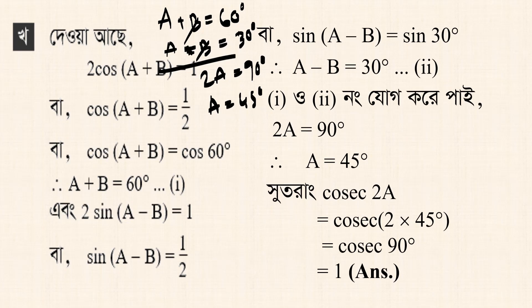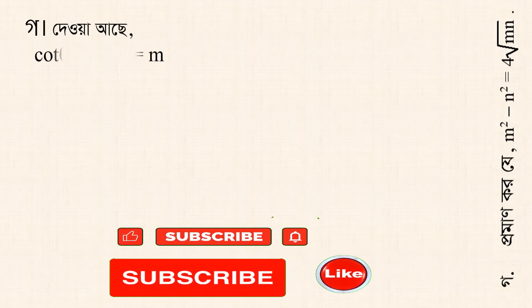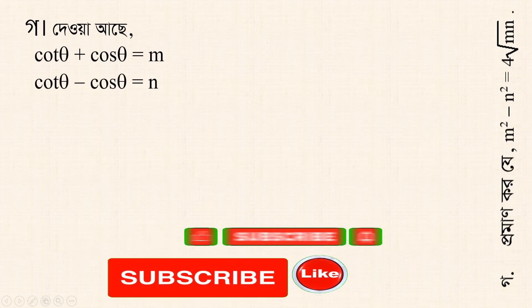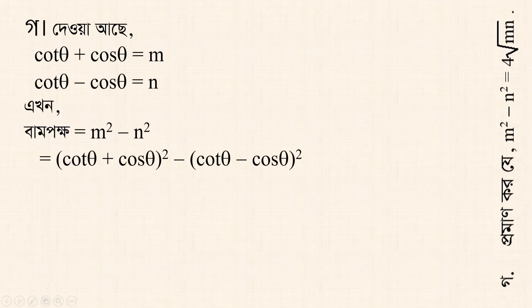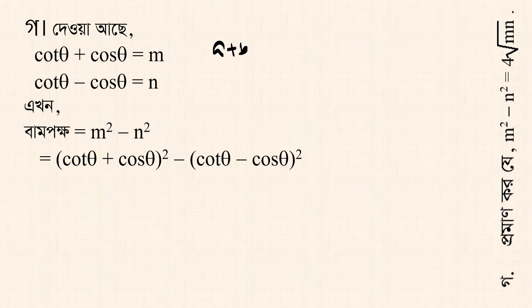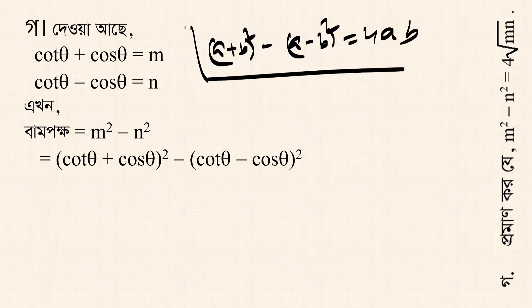We have a new problem: m squared minus n squared equals 4 root mn. Given that cos theta plus cos theta equals m and cos theta minus cos theta equals n. On the left side we have m squared minus n squared, which factors as (a plus b)(a minus b).